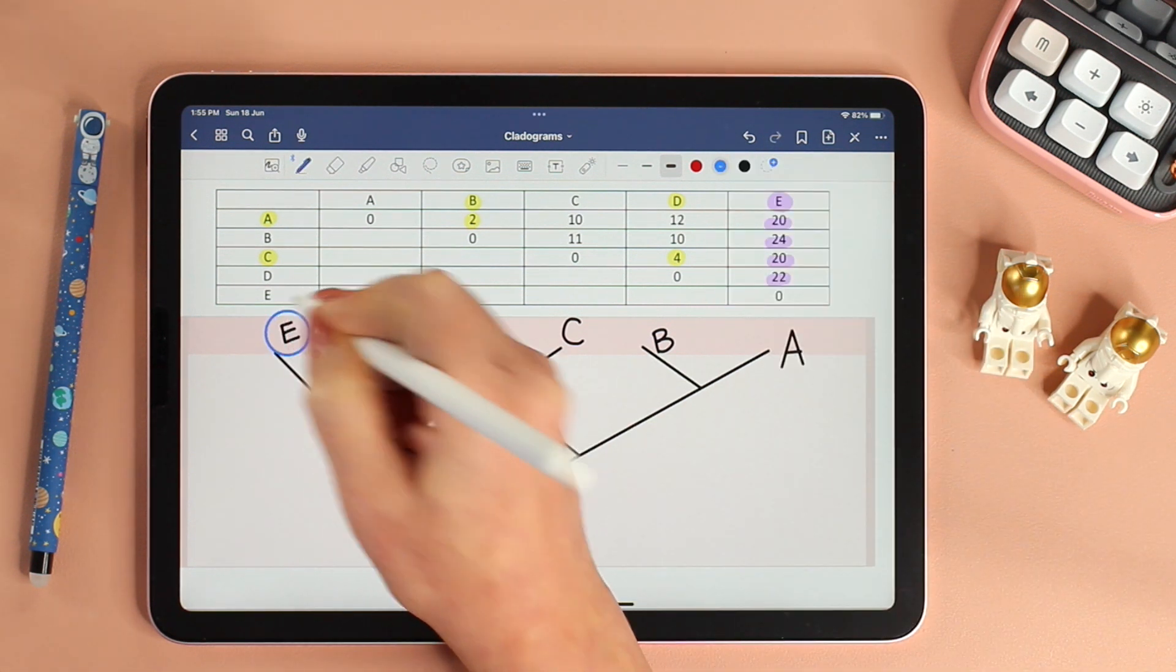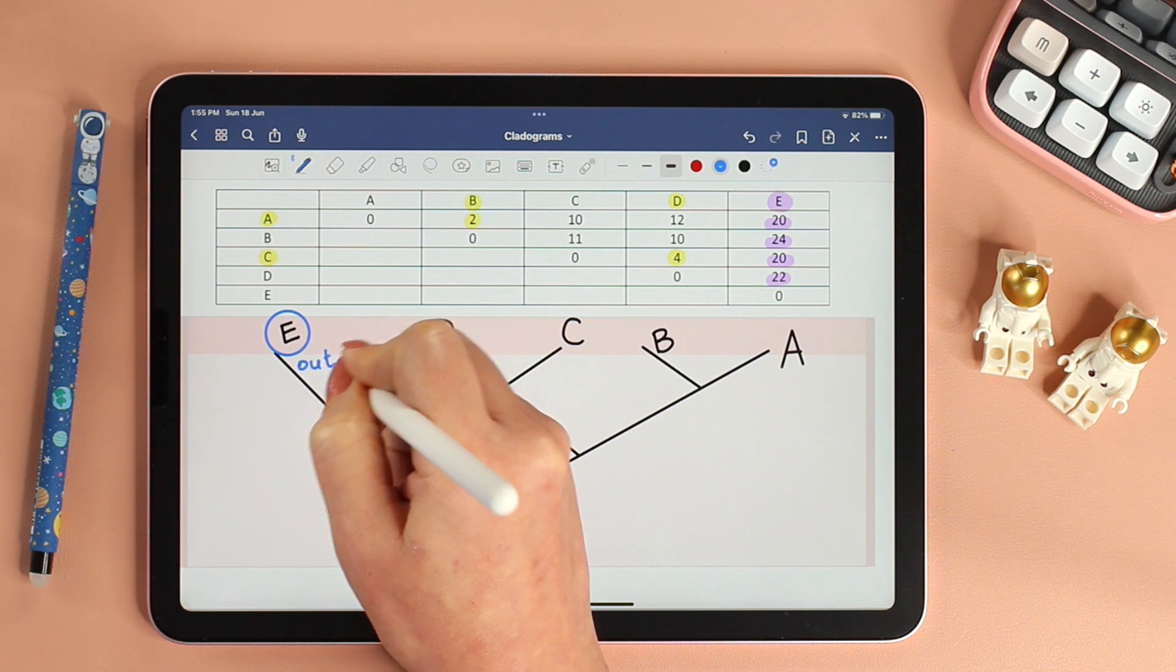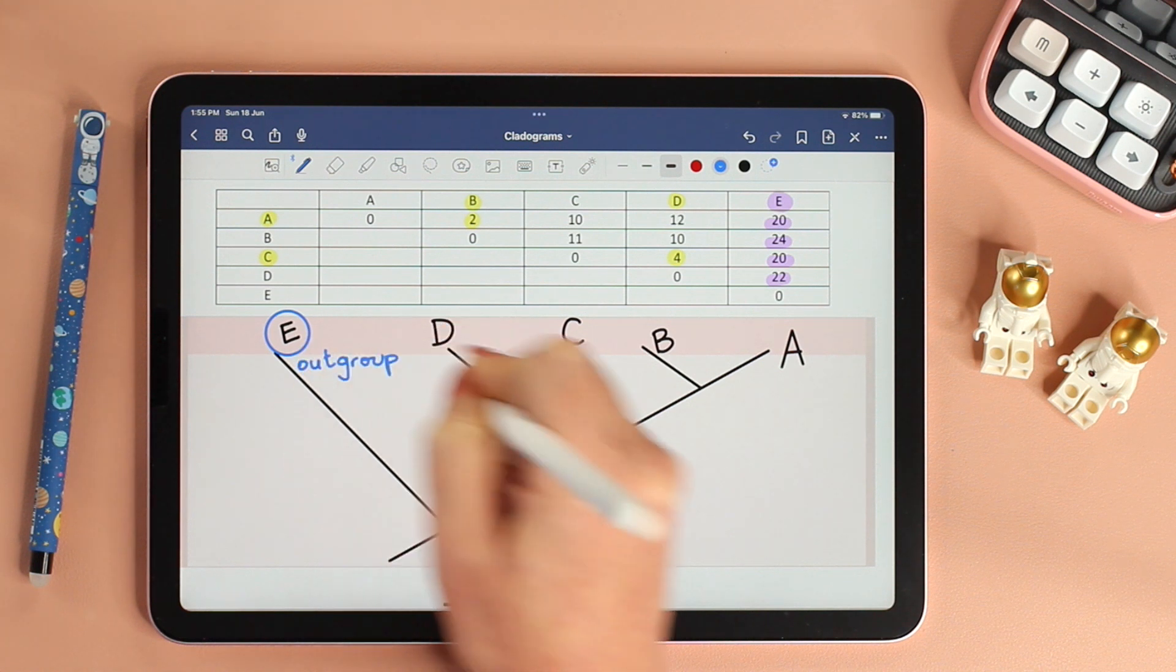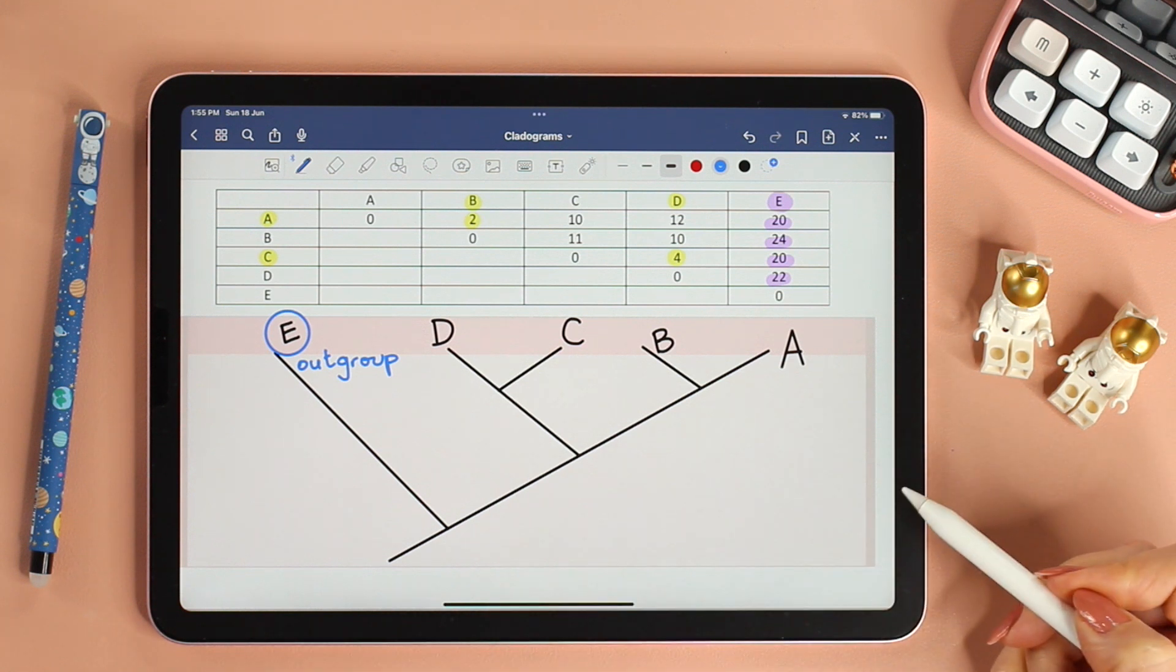E represents our outgroup, meaning the species with the most differences, and hence the least related to the other species.